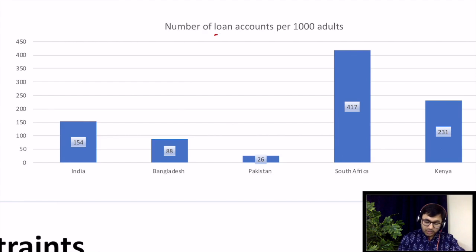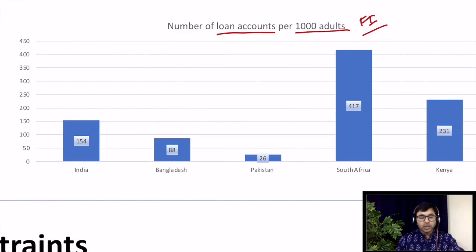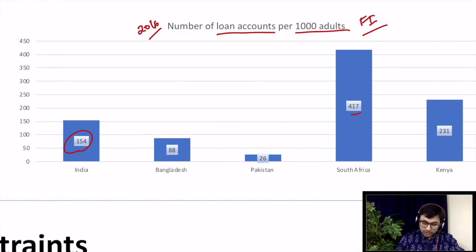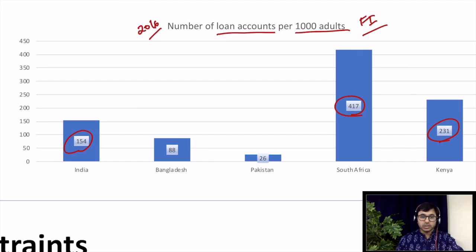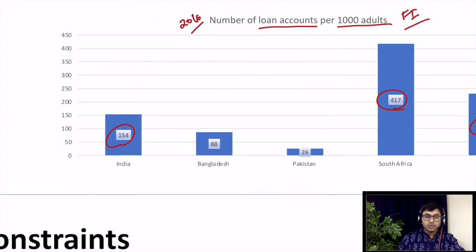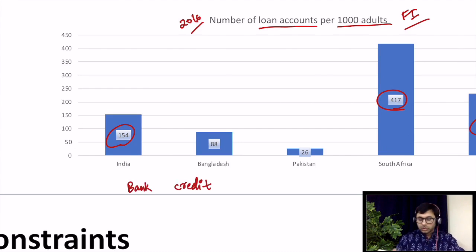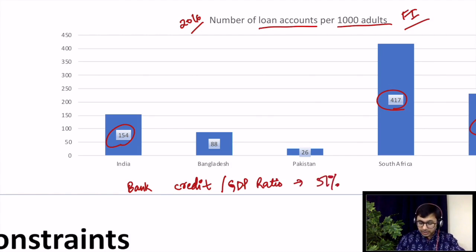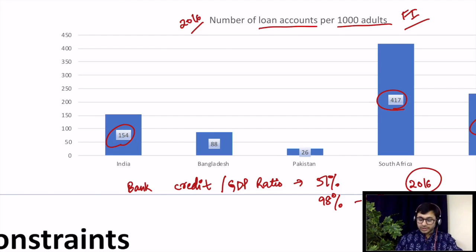Another data point showing India is not doing well on financial inclusion is number of loan accounts per 1,000 adults — it stands at 154 as of 2016. In South Africa it is as high as 417, and in Kenya it is 231. It is surprising that India is lagging behind these nations. Another very important data point: bank credit to GDP ratio in India is 51%, whereas it is as high as 98% in China. This data is from 2016 as provided by Niti Aayog.